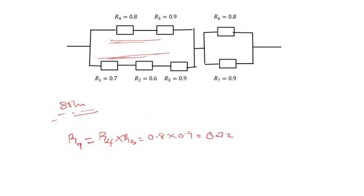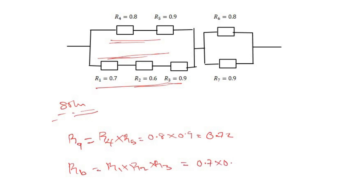Now let's call R_B the combined reliability of units 1, 2, and 3 in series: R_B = R1 × R2 × R3 = 0.7 × 0.6 × 0.9 = 0.378. We have now reduced our system to the first level.